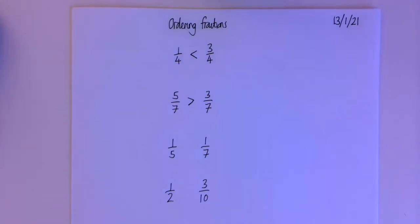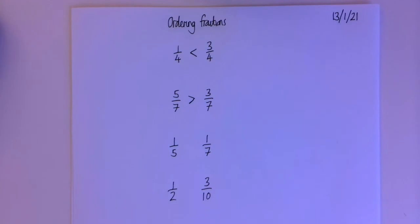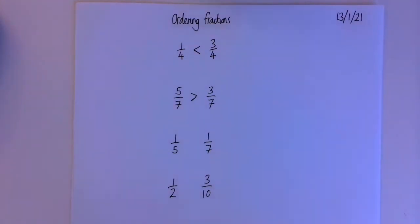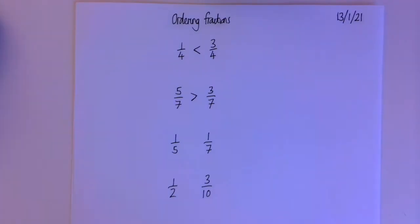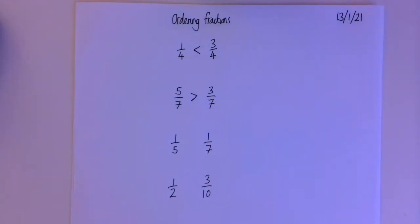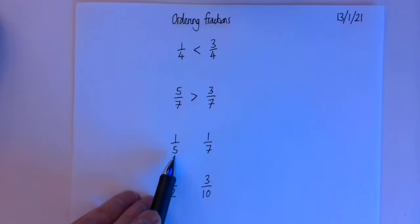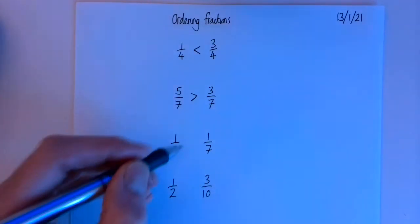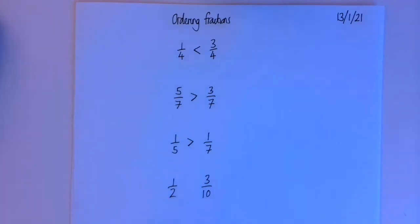Common sense can help us with more complicated ones where we've got different denominators. If I take a pizza and cut it into five pieces, and a second identical pizza cut into seven pieces — which has the bigger pieces? The fifths are going to be bigger than the sevenths, so one fifth is bigger than one seventh.